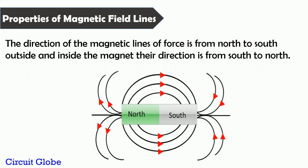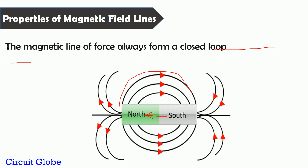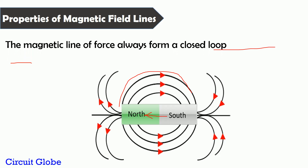The first property of the magnetic field lines is that they always move from north to south on the outside of the magnet, but inside the magnet they always move from south to north. The second property is that the magnetic field lines always form a closed loop, as you can see here.